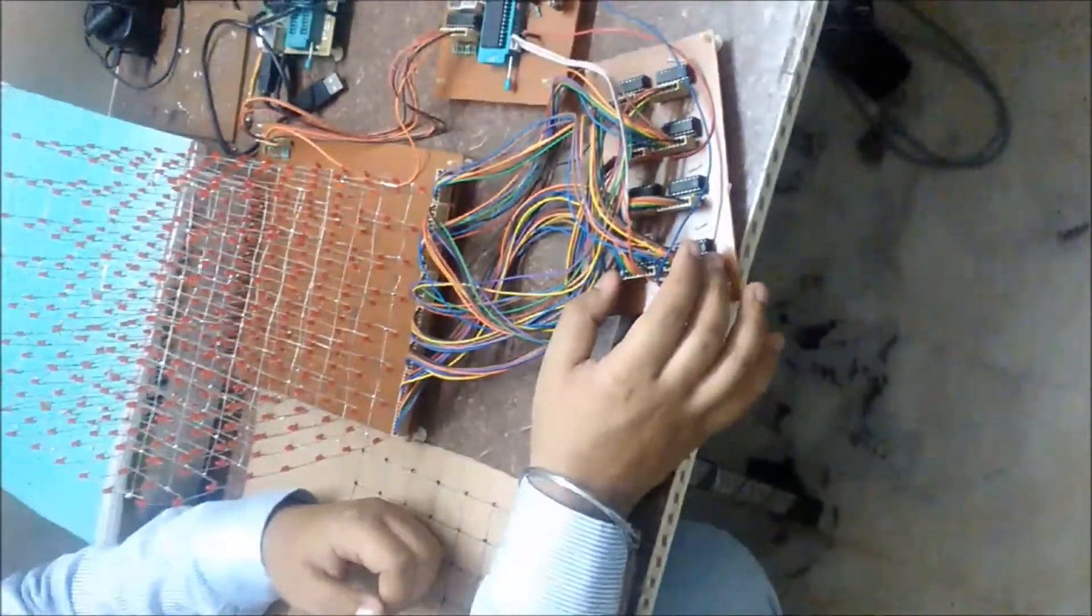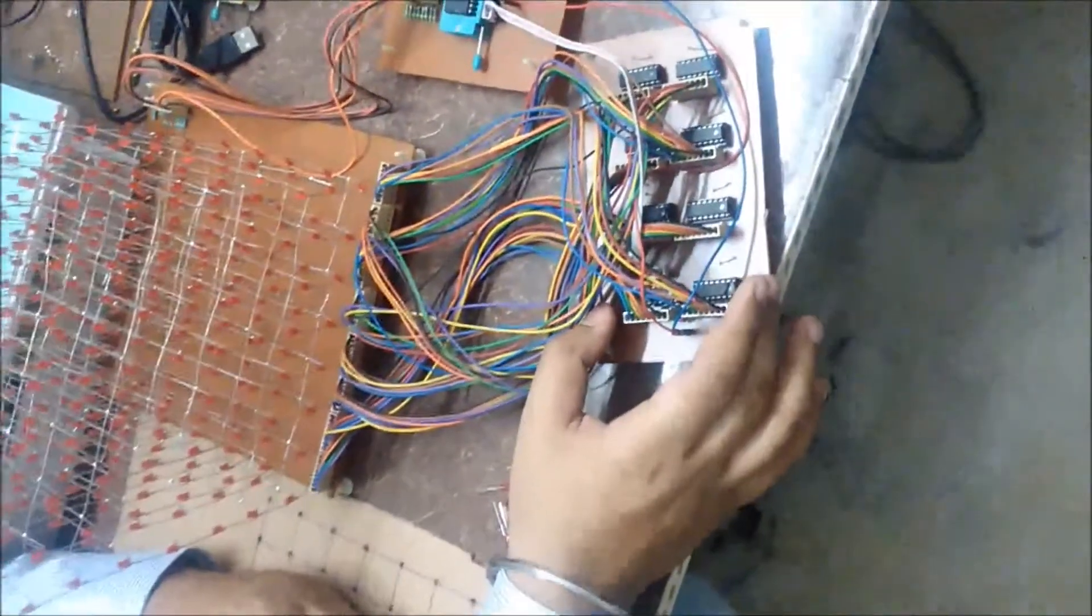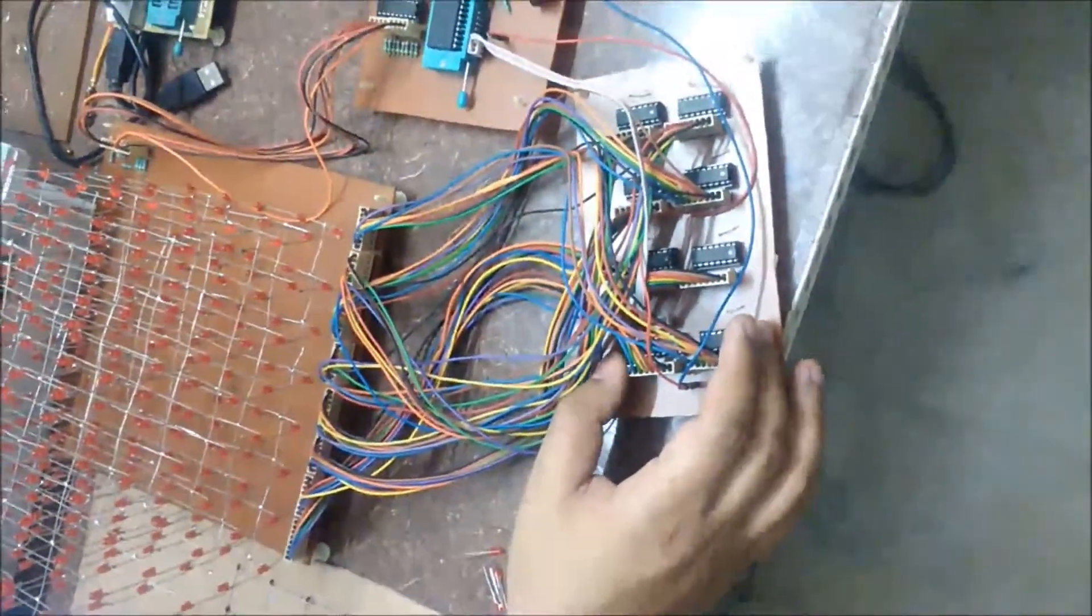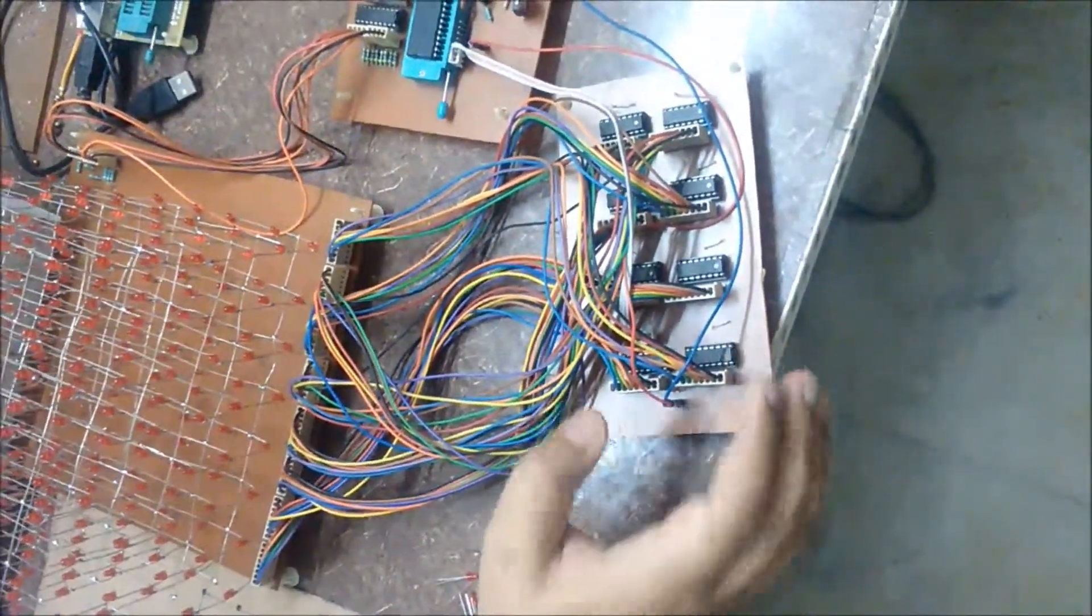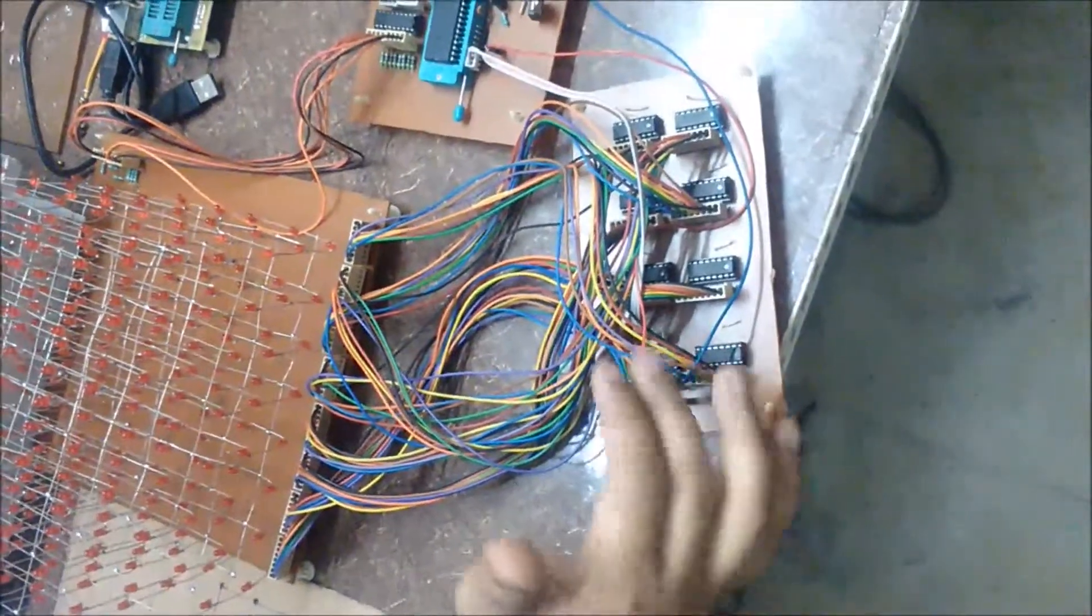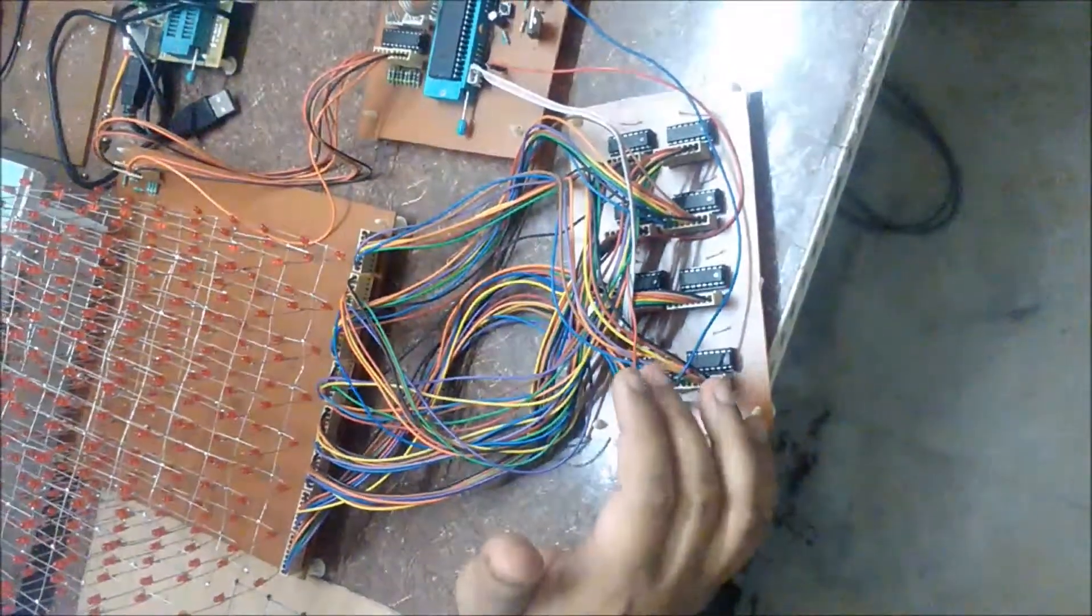The 74HC595 shift register is an 8-bit shift register. It is serial-in, serial-out and parallel-out. The 8 registers are used in a cascading structure.